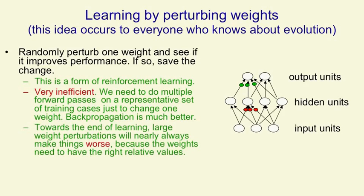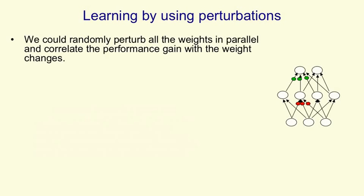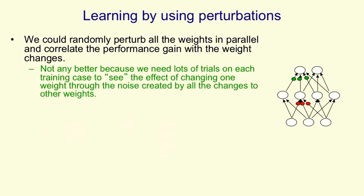An additional problem with randomly changing weights and seeing if it helps is that towards the end of learning, any large change in a weight will nearly always make things worse, because the weights have to have the right relative values to work properly. So towards the end of learning, not only do you have to do a lot of work to decide whether each change helps, but the changes themselves have to be very small. There are slightly better ways of using perturbations to learn. One thing we might try is to perturb all the weights in parallel and then correlate the performance gain with the weight changes. That actually doesn't really help at all. We need to do lots and lots of trials with different random perturbations of all the weights in order to see the effect of changing one weight through all the noise created by changing all the other weights. So it doesn't help to do it all in parallel.